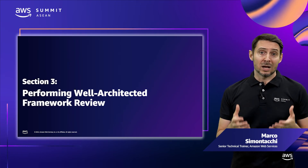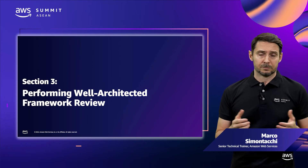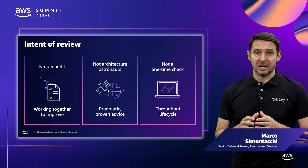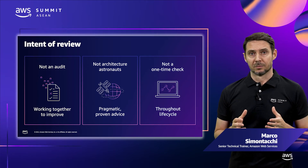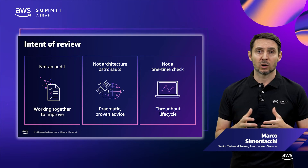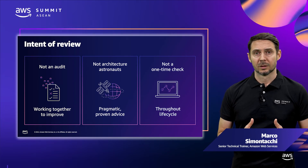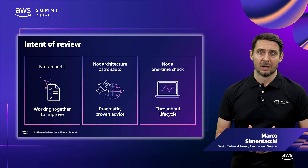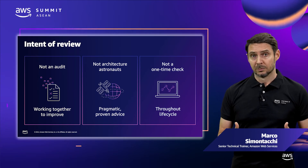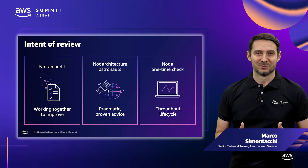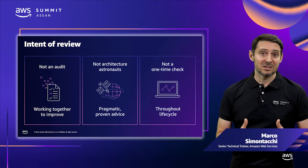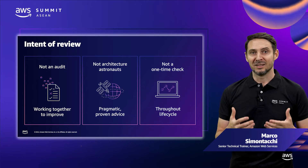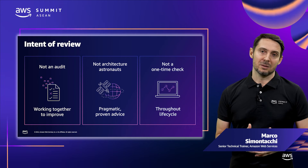Now let's have a look at performing a Well-Architected Framework review. The intent of a review is to improve outcomes. It is not an audit — it's about a team working out how to improve. An audit usually has some sort of pass-fail mechanism; a Well-Architected review does not. This should not be finger-pointing. It should be a chance to get many stakeholders from the business to work together to make sure we are addressing the needs of the entire business.